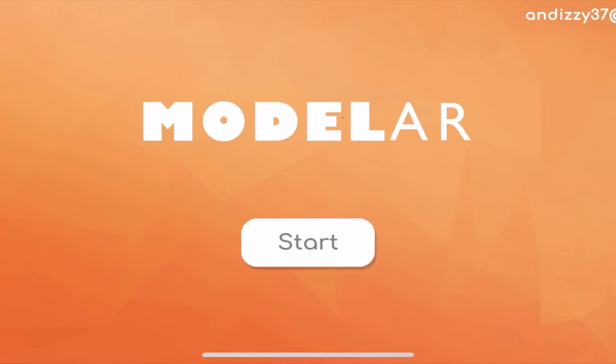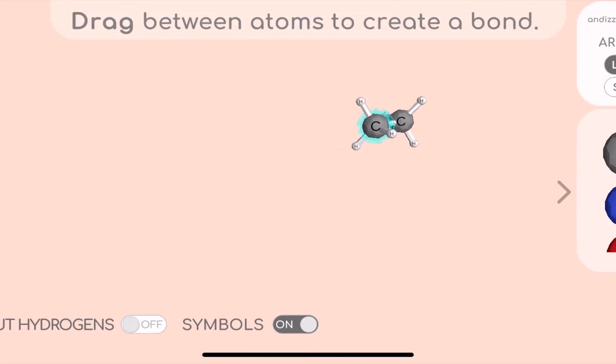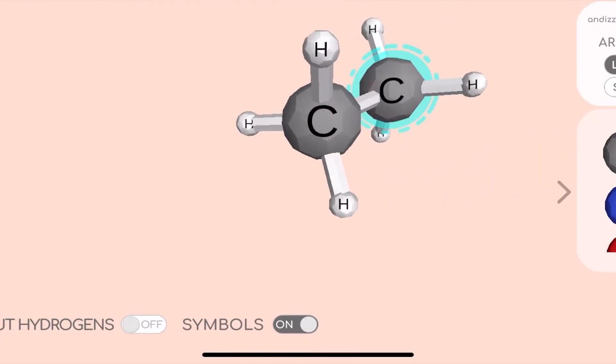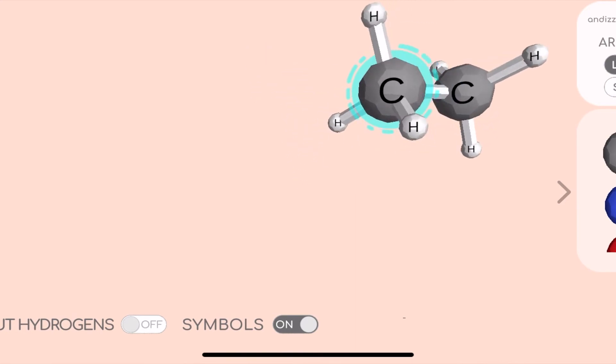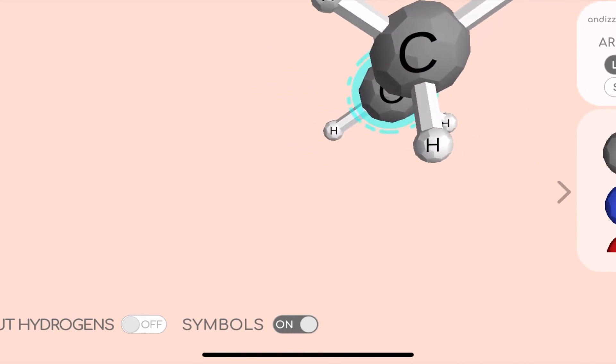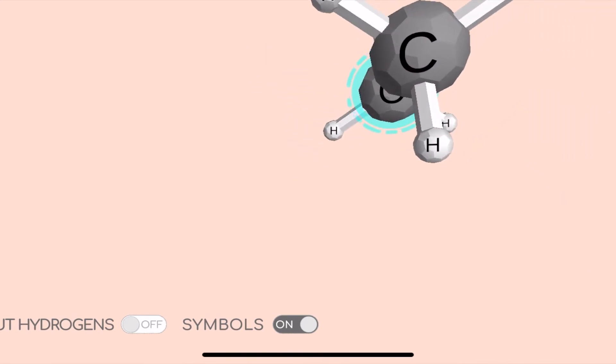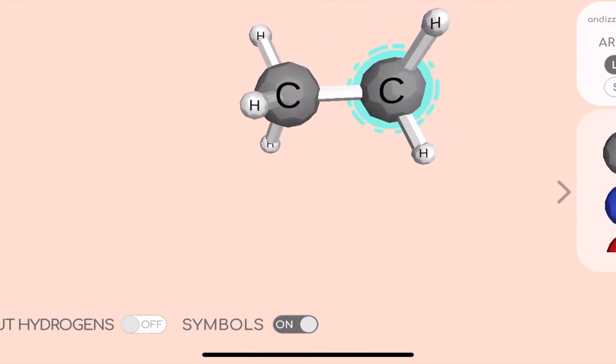The final online resource is Model AR — it might sound familiar as I've mentioned this app before. You are able to view atoms, but this app can be limited as it doesn't provide all different atoms to choose from. As you can see, we can get a 3D representation of the molecule, but a downside is that you can't see conformations in staggered or eclipsed because they simply don't offer that. Overall the app is great for viewing and visualizing molecules, and the link can be found below.